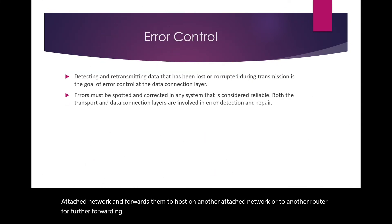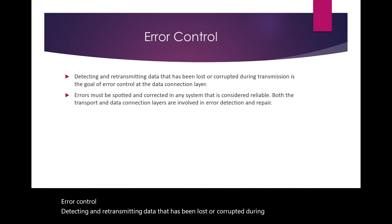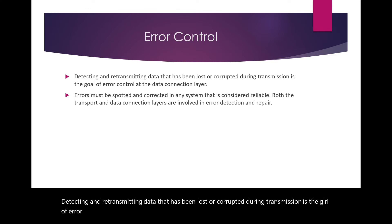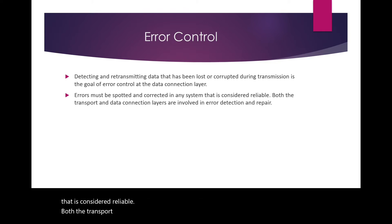Error control: Detecting and retransmitting data that has been lost or corrupted during transmission is the goal of error control at the data link layer. Errors must be spotted and corrected in any system that is considered reliable. Both the transport and the data link layers are involved in error detection and repair.